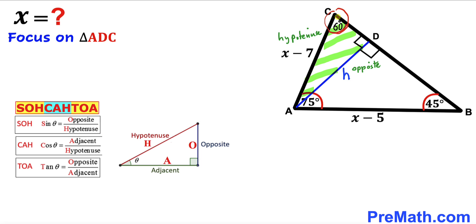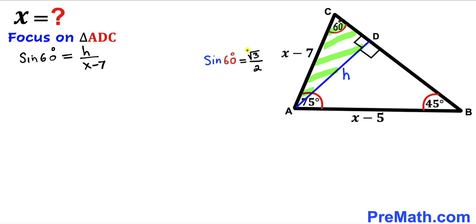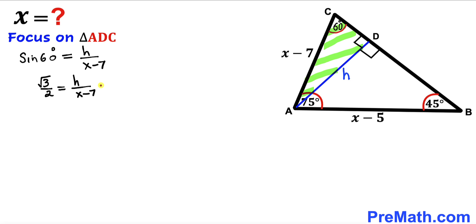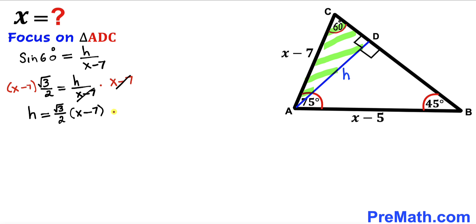For angle 60 degrees, h is the opposite side and AC (x minus 7) is the hypotenuse. So sine of 60 degrees equals h divided by (x minus 7). Since sine of 60 degrees is √3 divided by 2, we multiply both sides by (x minus 7) to isolate h. Therefore h equals (√3 / 2) times (x minus 7). Let's call this Equation 1.